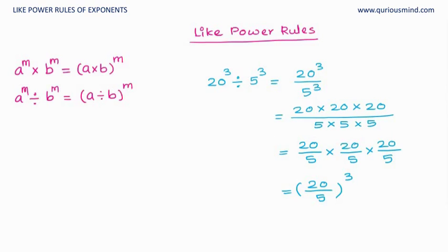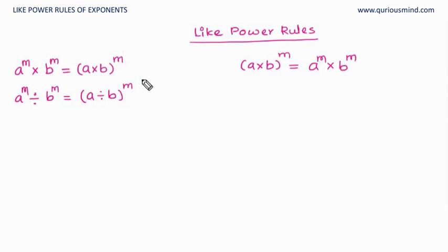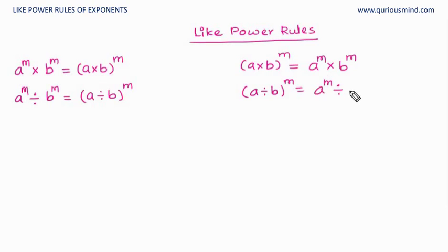It is also important to look at these rules from the opposite direction. That is: (a × b) raised to m equals a raised to m multiplied by b raised to m. Similarly, (a ÷ b) raised to m equals a raised to m divided by b raised to m. In the like power rules, we should be able to read them in both directions. You will understand why when we solve a few problems.